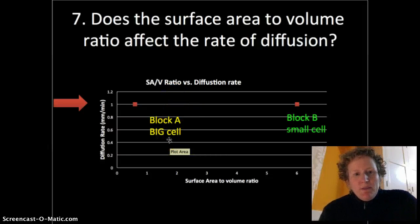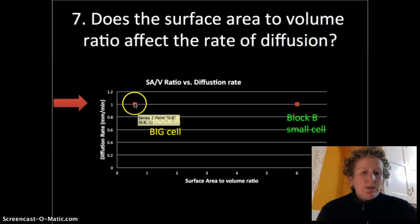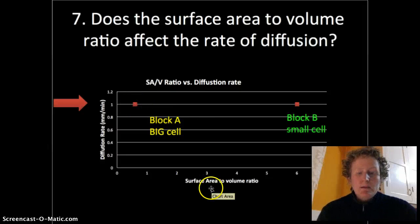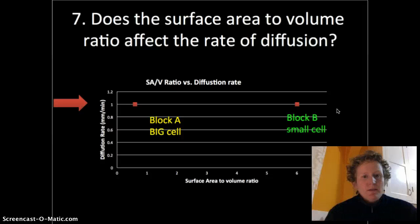Number 7 on your lab sheet. Does the surface area to volume ratio affect the rate of diffusion? Well when we look at the rate on a graph we see it's 1 for the big cell and 1 for the small cell. So it doesn't really matter. Size doesn't matter. Just like when you drive your car across Texas you can only go 60 miles an hour. When you drive your car across Rhode Island you can only go 60 miles an hour.